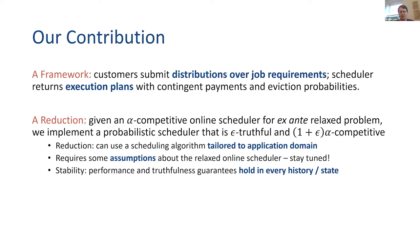Something we really care about here is stability. Because everything's probabilistic, what we mean by truthfulness is a little bit ambiguous. The property I want is that for every history of realizations — for every state my schedule can be in — from that point onward, I still want to be approximately truthful and have good performance. So it's not that I have some rare failure state, and if I enter it, the world explodes.